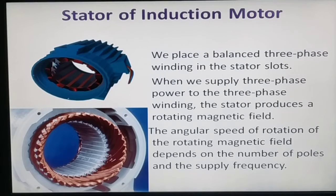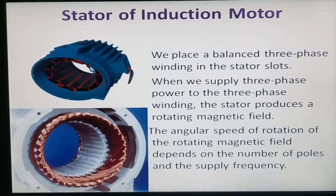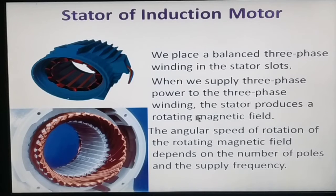This is the stator of the induction motor. This is the stator image showing the stator slots. The winding is fixed in the stator slot. You place balanced three-phase winding in the stator slots. When we supply three-phase power to the three-phase winding, a rotating magnetic field is produced. This rotating magnetic field is produced by the three-phase AC supply.